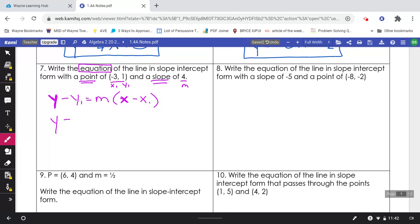And then everything else you are going to change. y1 is 1. m is 4. That's the x that stays as an x. And then minus x1. So it's a minus and a negative 3.